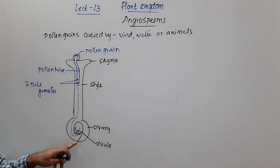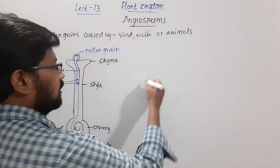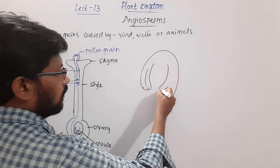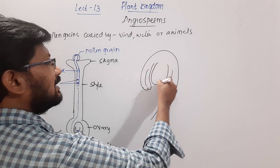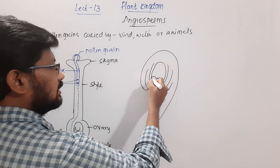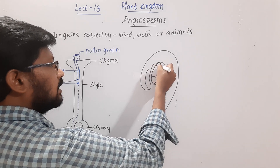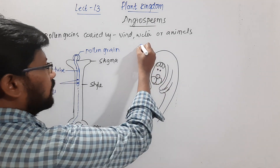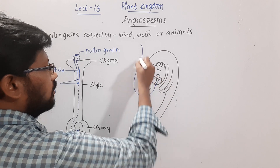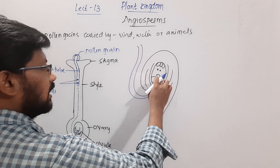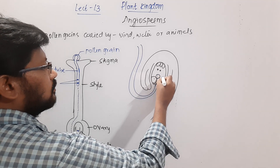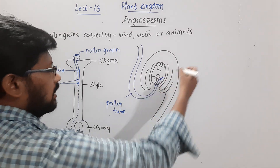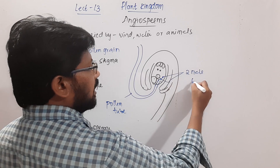The pollen tube grows and finally enters into the embryo sac present inside the ovule. Inside the embryo sac there are synergid cells, the egg cell, two polar nuclei, and three antipodals. The pollen tube enters the embryo sac and breaks open to release the two male gametes.